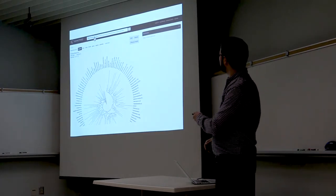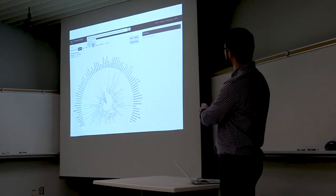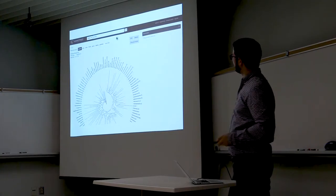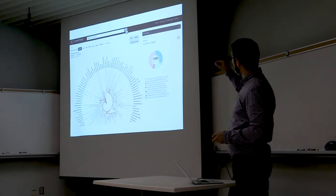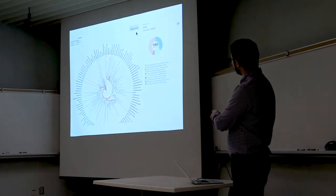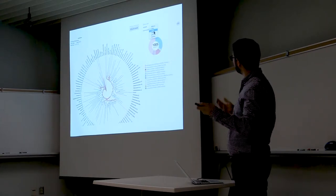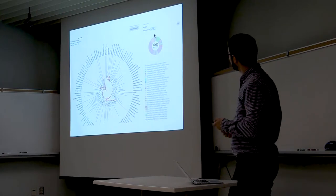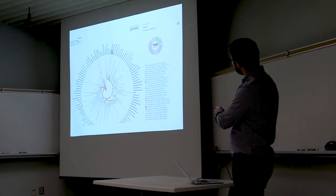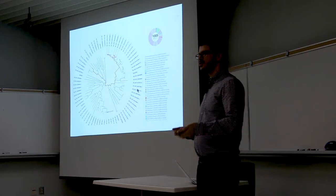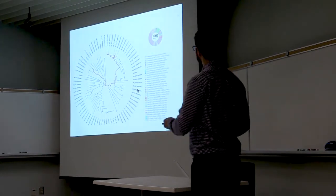Here's an example: we query the tree of life with microbial collagenase, hit go, and it paints it onto the tree. You get a summary you can examine at the phylum, class, or genus level. Suppose you're interested in a lineage like Myxococcus — you can zoom in all the way down to the genomes and see exactly which genomes have the trait you're interested in.